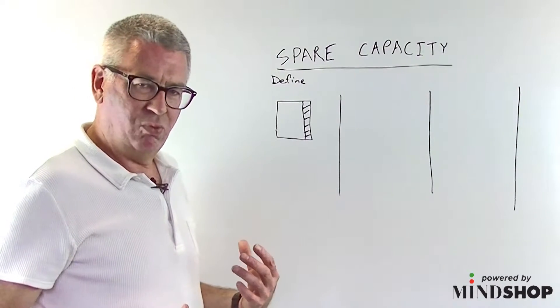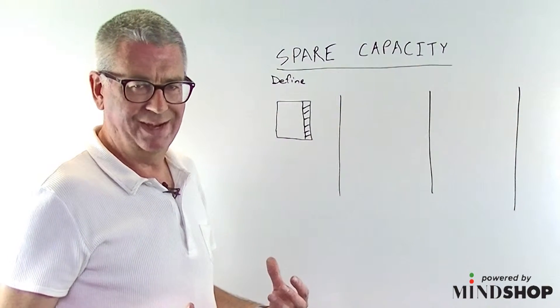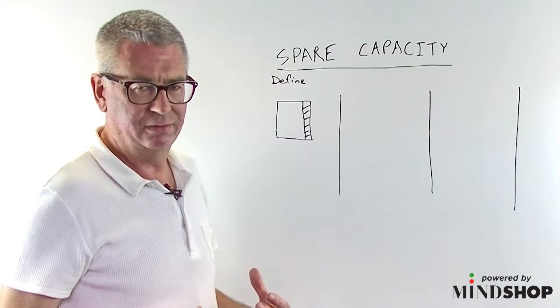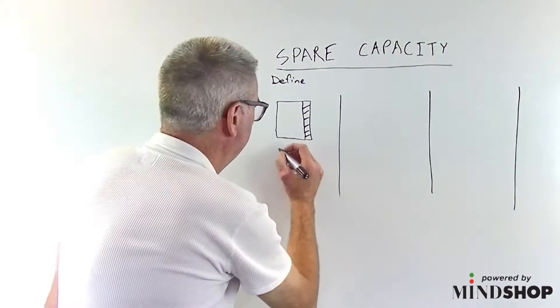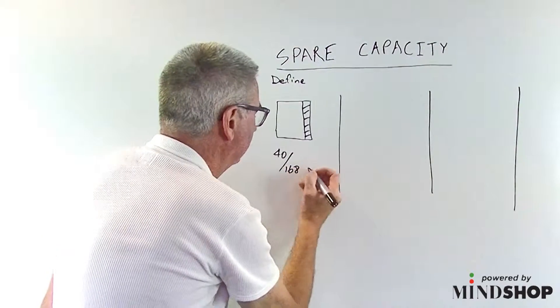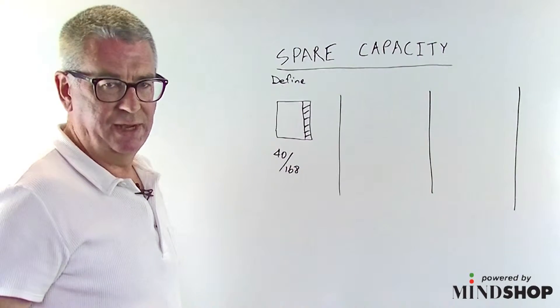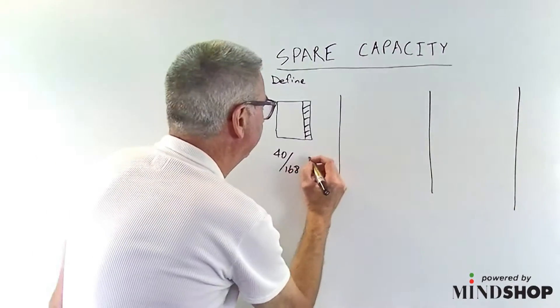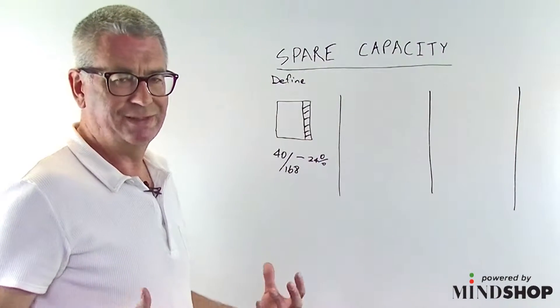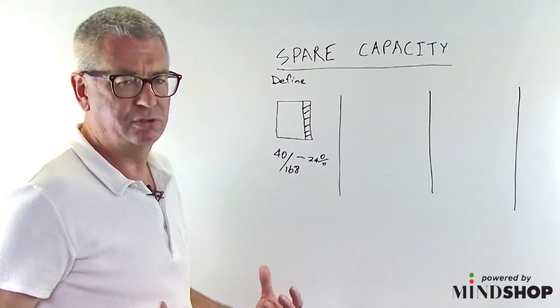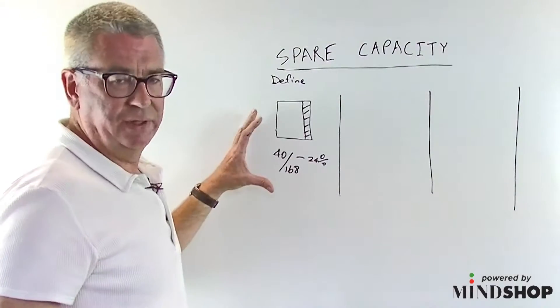If we think about it in a different way and we think well that buildings are only used during business hours, it's worse than that 15% spare capacity. We're only using 40 hours out of 168. So just that equation alone means that we're only using 24% of that. So that's a lot of capex sitting there for most of the time not generating any value.